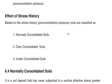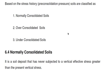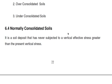Based on stress history or Pre-Consolidation Pressure, soils are divided into three types: Normally Consolidated Soil, Over Consolidated Soil, and Under Consolidated Soil. A Normally Consolidated Soil has never been subjected to any vertical effective stress greater than the present vertical effective stress.